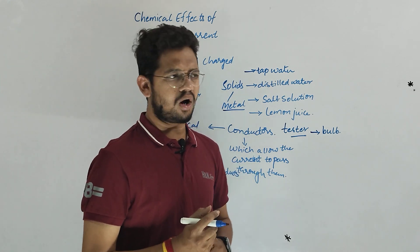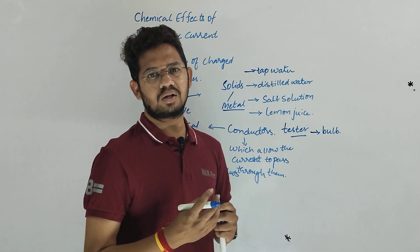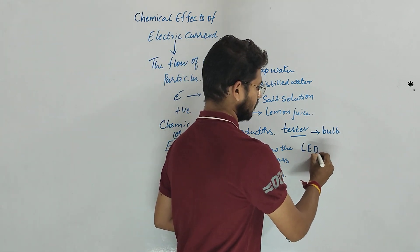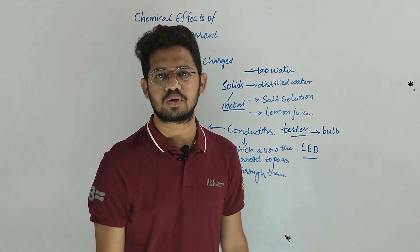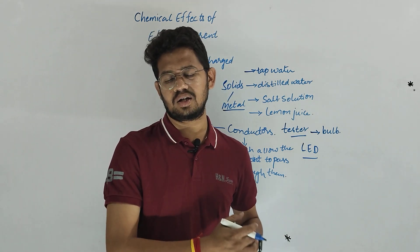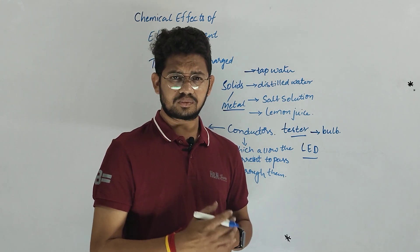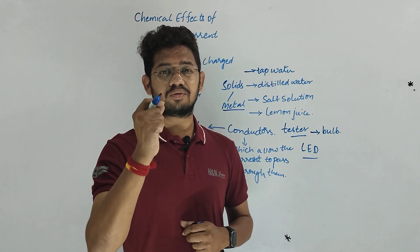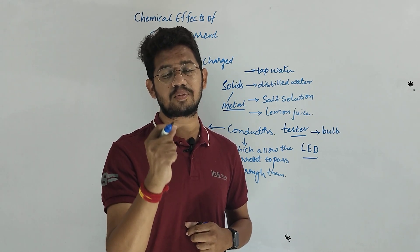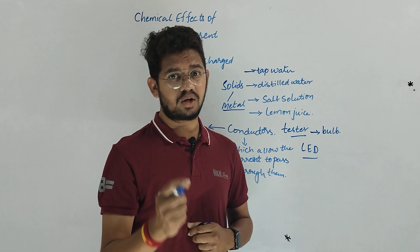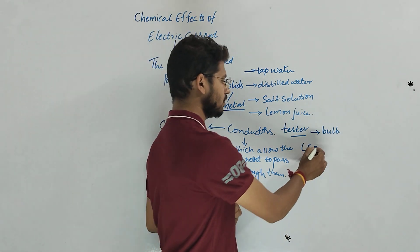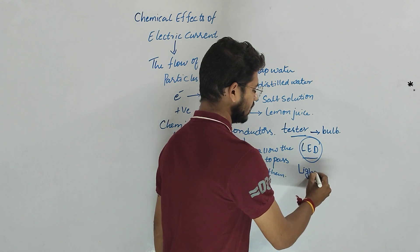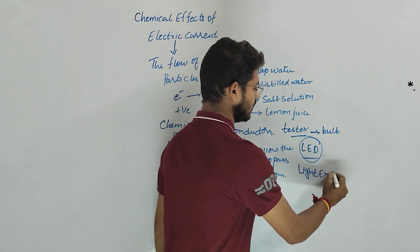In earlier days different kinds of bulbs were used in testers, but now we use an LED — a Light Emitting Diode. This is because some devices cannot produce large amounts of current. In that condition, we need a tester output that responds to a very small amount of current. When even a minute amount of current passes through an LED, it glows — making it the best output unit for this purpose.